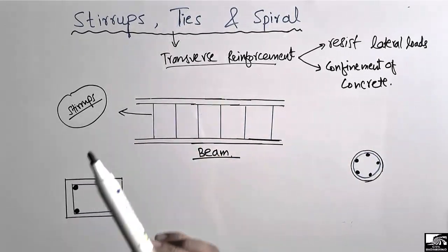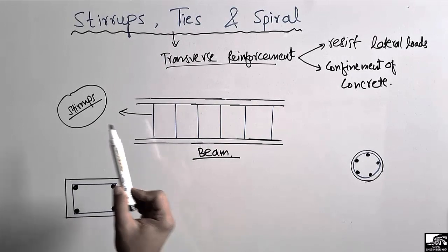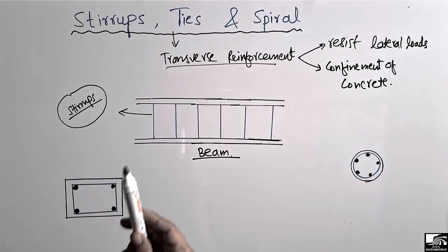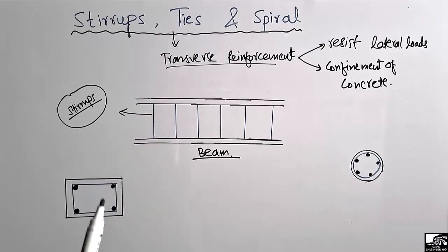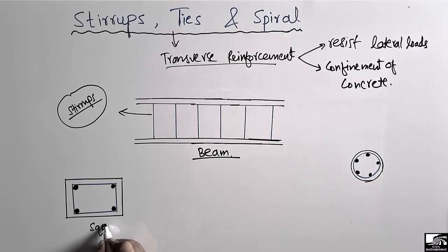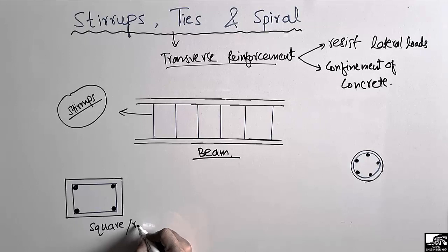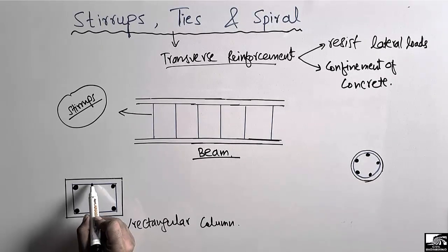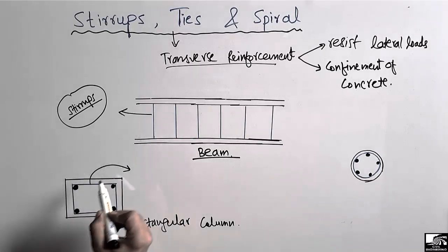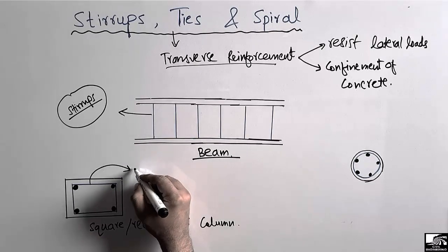Now, what are ties? Ties have the same purpose as stirrups, but when we use transverse reinforcement in a square or rectangular column, such reinforcement is called ties. Here, the blue lines shown in the square or rectangular cross section of the column represent the transverse reinforcement, which is known as ties.